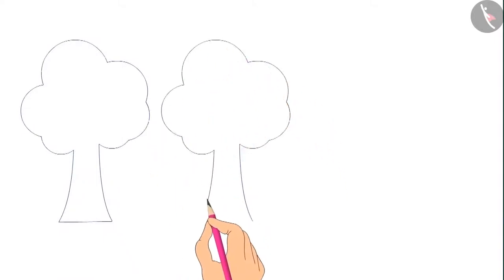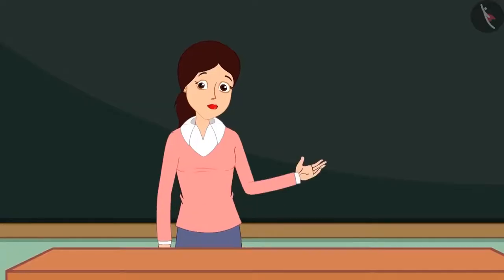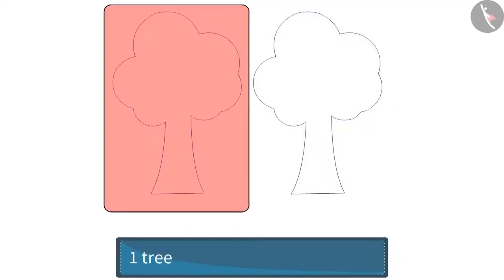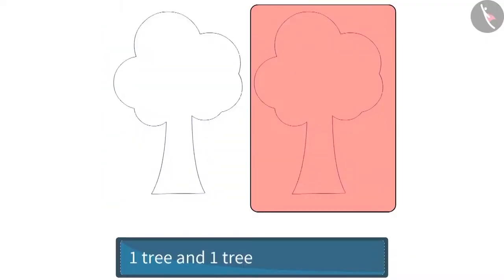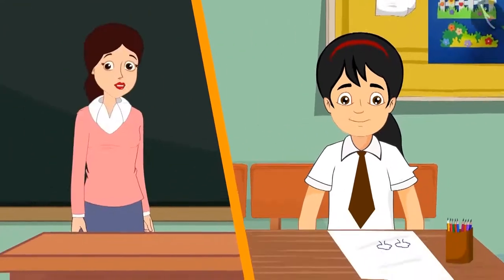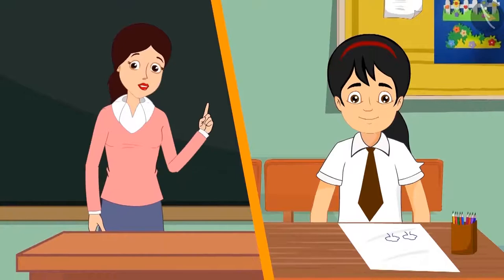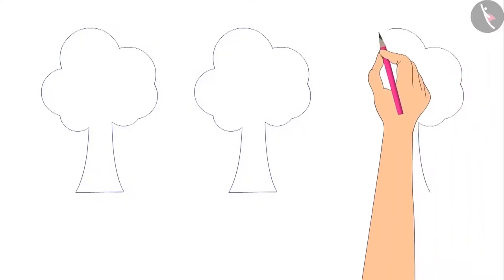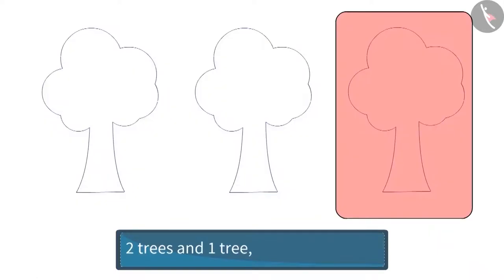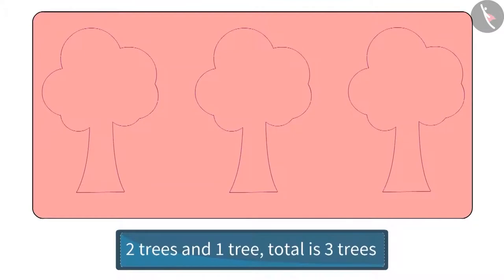Because she had to make a dense forest, she drew another tree. Pinky, what have you drawn in the picture? At first I drew one tree, then I drew another tree, so in total I drew two trees. If you draw another tree, then how many trees will be there? Two trees and one more tree — so now in total there are three trees. Very good, Pinky.